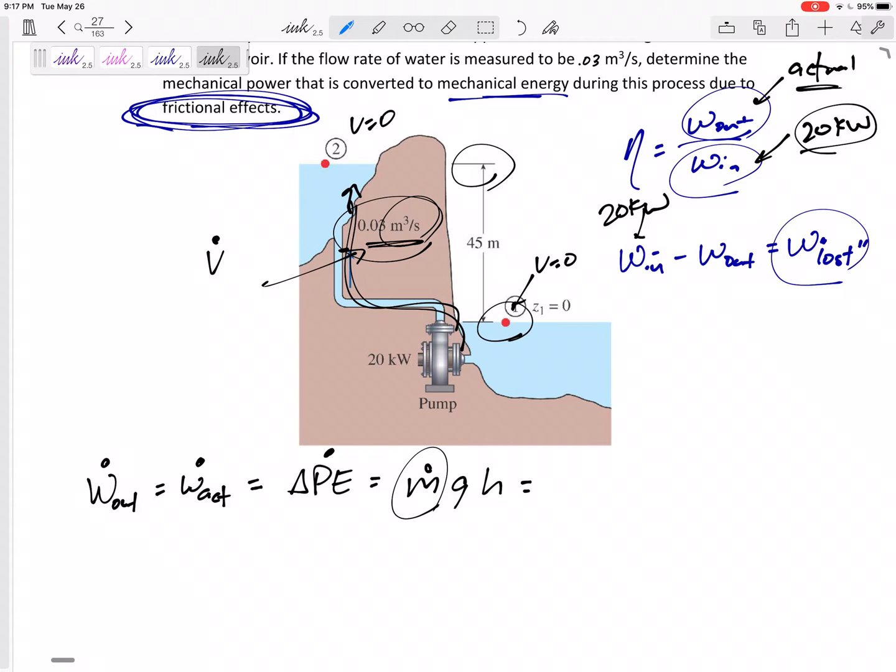All right, that's not kilograms. If that was kilograms per second, yeah, we just plug that in right there. It's not. It is V dot. How do we get M dot if we know V dot? M dot is rho V dot.